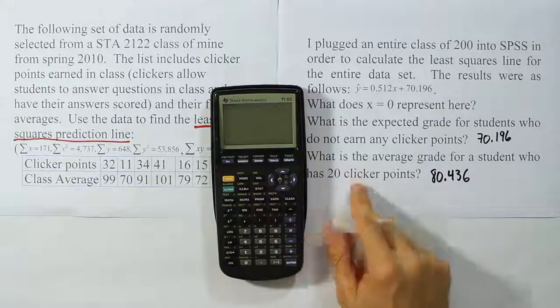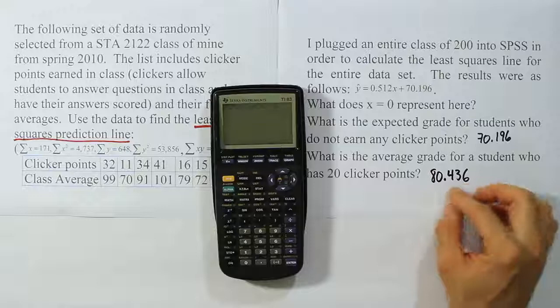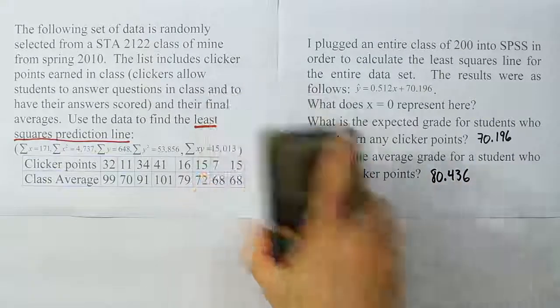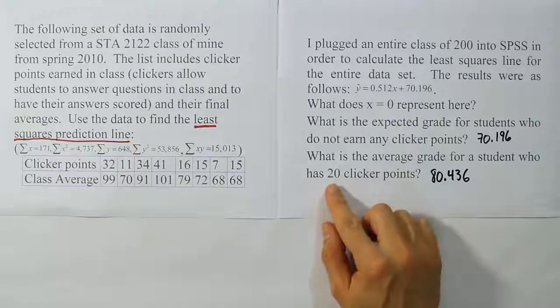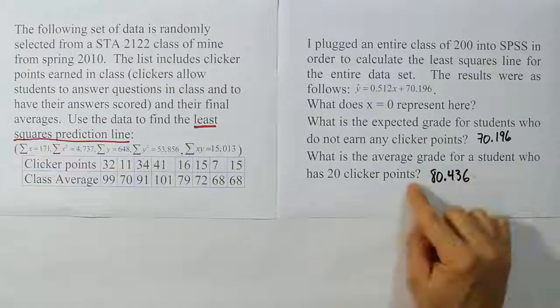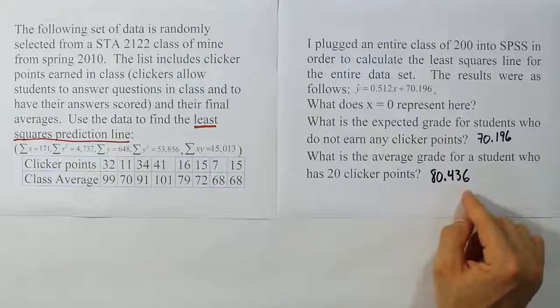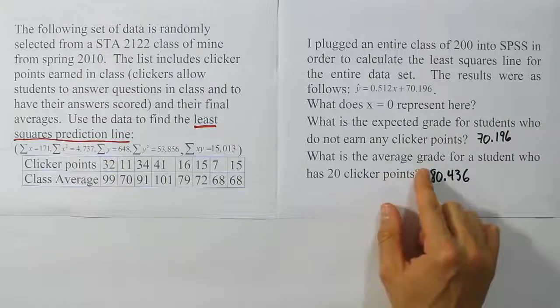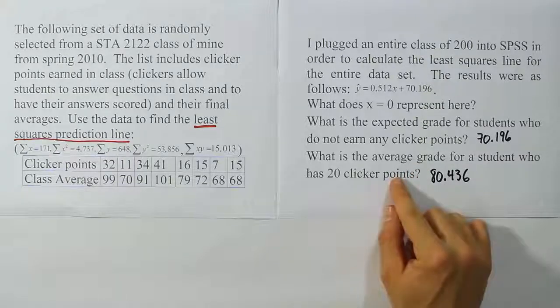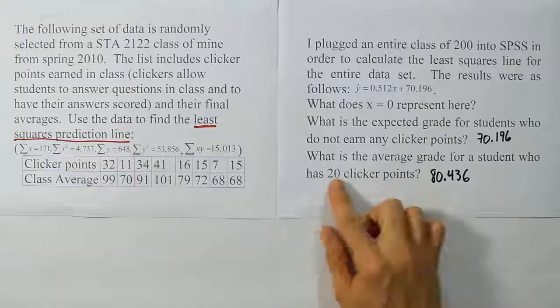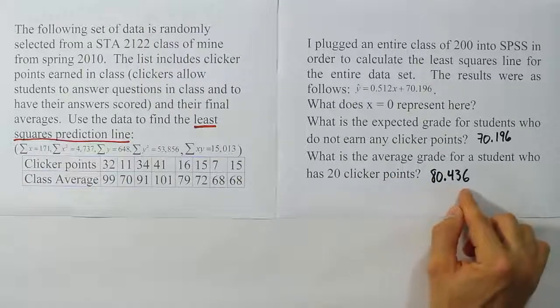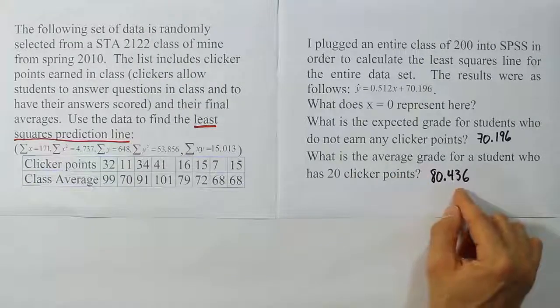If a student has as many as 20 clicker points, we expect that the average grade for that student would be around 80.436. One other way to say it is that students who have 20 clicker points will usually have an average grade collectively of 80.436. Remember, this is an average grade. It's not the grade for a particular student who has 20 clicker points, but rather for all the students who have 20 clicker points. This is an estimation of the average grade that we expect for that group of students, 80.436.